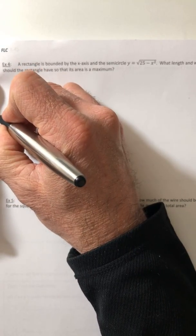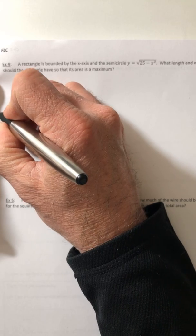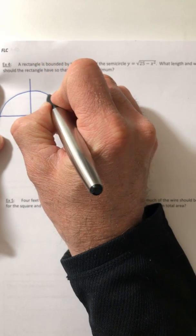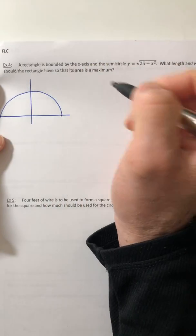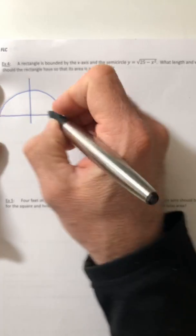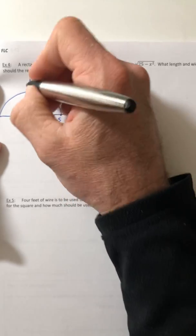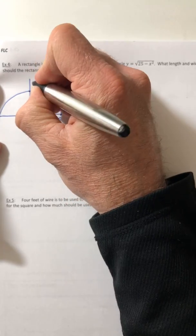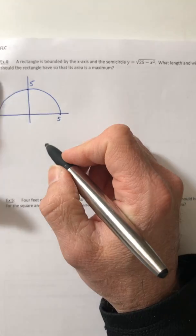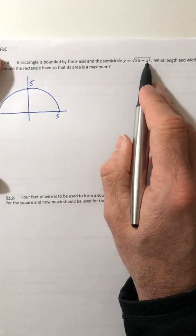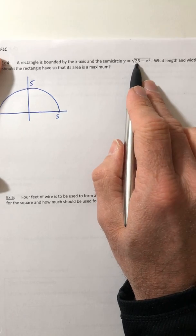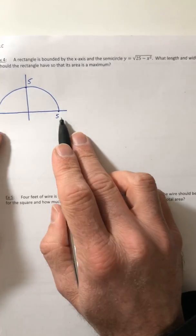So semicircle, not bad. Going from negative 5 to 5 and then it's hitting the y-axis at 5. And for those of you going, how did you know it was 5? Well, because if you look inside your equation for the semicircle, what's the square root of 25? 5.